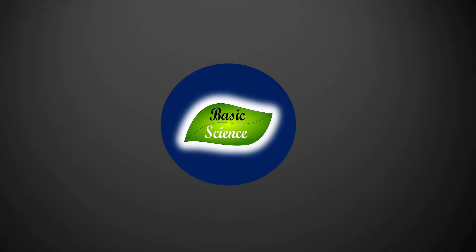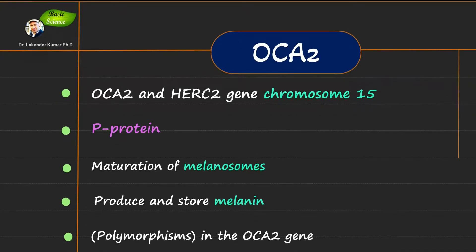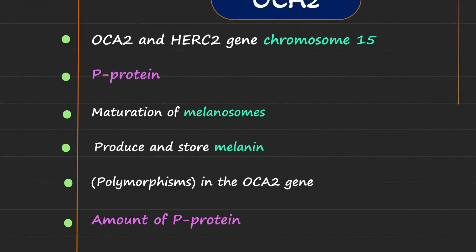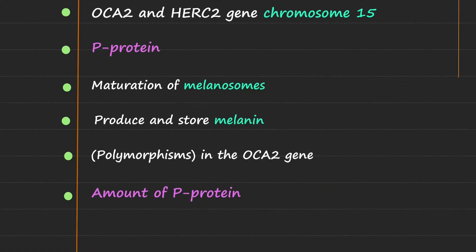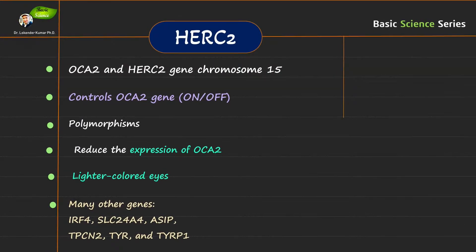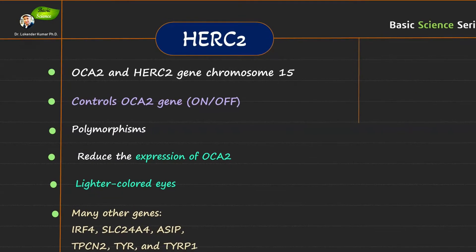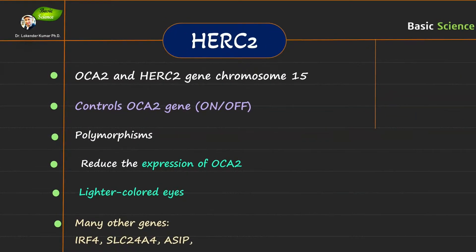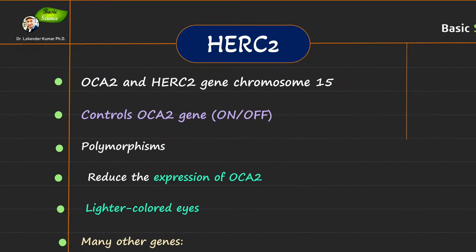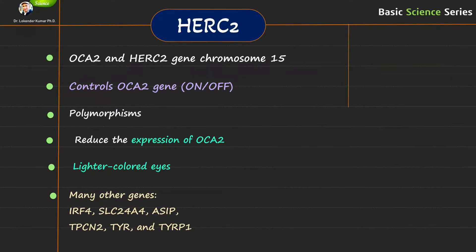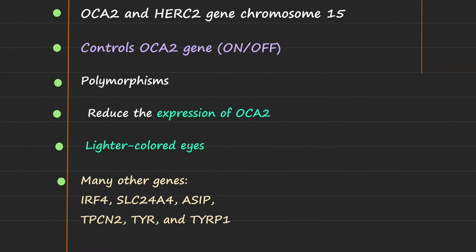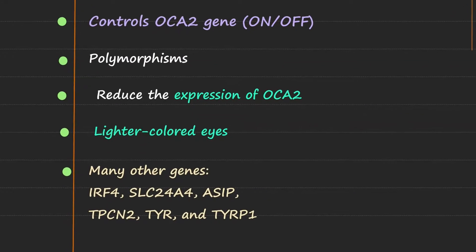Hi everyone, welcome to the Basic Science Series. I'm your host Rakinder Kumar. In our previous videos we discussed some of the genes that are important for eye color in humans. Today we're going to discuss another important gene — the HERC2 gene. We already discussed the OCA2 gene, and today we're going to dig deep into the concept of OCA2 and HERC2 genes and their relationship in the context of eye color. I'm also going to show you some of the other genes responsible for eye colors.